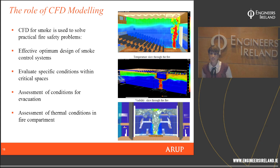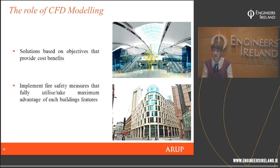The role of CFD modelling in fire engineering comes in because you want to create something that goes outside prescriptive codes. You have to demonstrate that your design, even if not strictly compliant, is still safe — and sometimes even safer than following the rules, because you optimise to the specific building. You can evaluate all conditions in an area of concern: evacuation routes, escape indoors, and thermal conditions in a compartment, designing a fire safety system that truly utilises the building's layout.